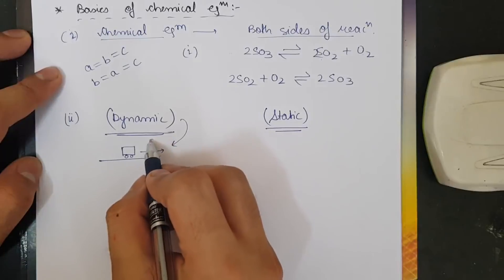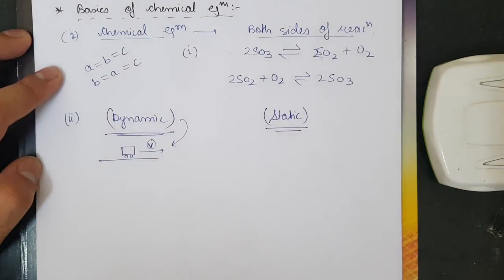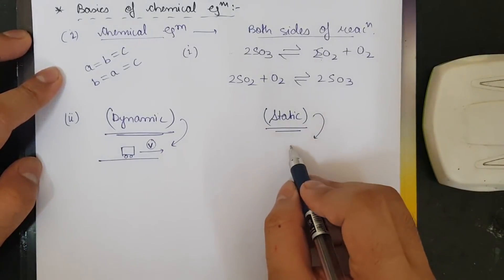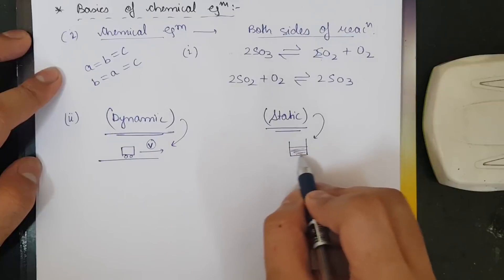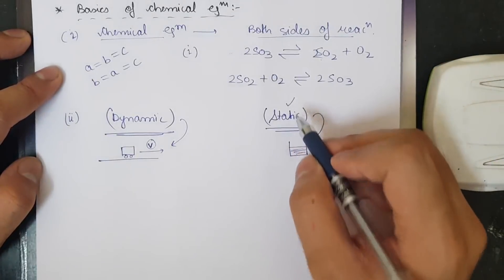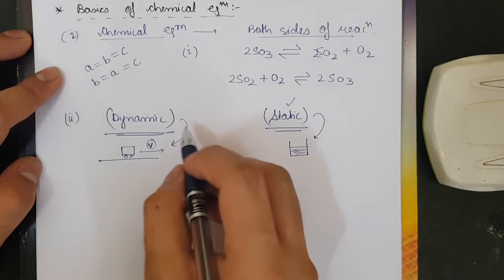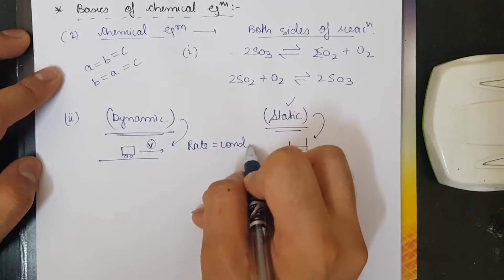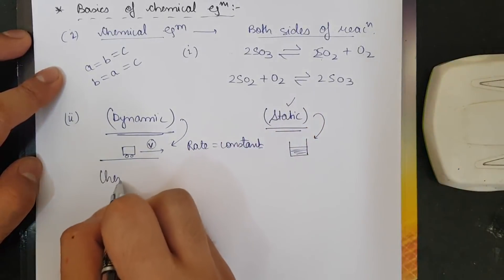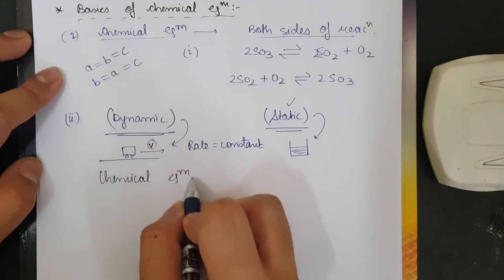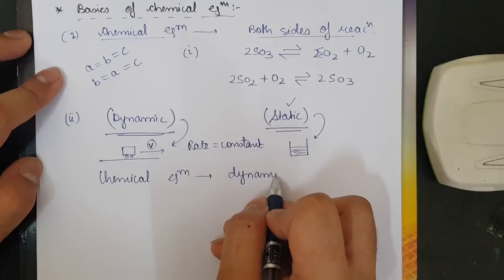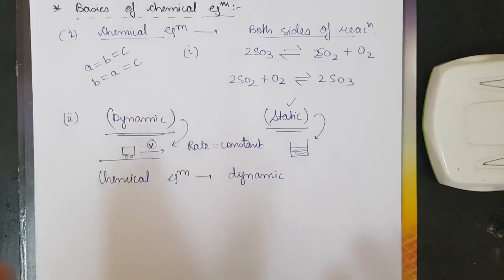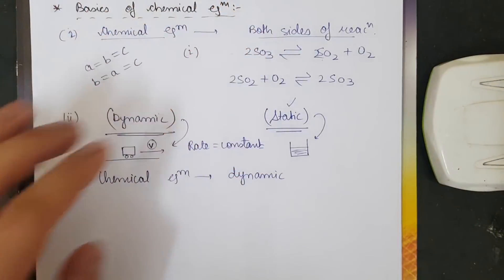Dynamic equilibrium means the process takes place but doesn't disturb the overall state — the rate remains constant. Static equilibrium, on the other hand, is like placing something in a container where it remains forever without any movement. So: static means no movement; dynamic means there is movement but the rate remains constant. Chemical equilibrium is dynamic — it moves on at a fixed rate in both directions.